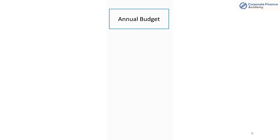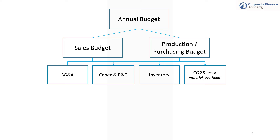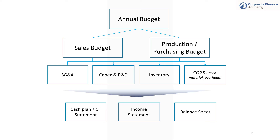Here's a quick overview of what the annual budget looks like in totality. You have the annual budget — the master budget — and then you have a couple things happening simultaneously: the sales budget leads the purchasing or production budget a little bit. Offshoots of those include your SG&A spend including headcount, your CapEx and R&D, inventory, and cost of goods sold — mainly labor, material, and overhead. Then you have your cash plan, cash flow statement, income statement, and balance sheet — those are the financial outputs of all the pieces above.